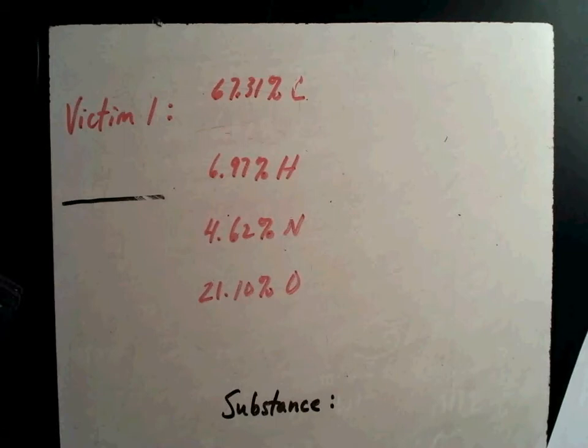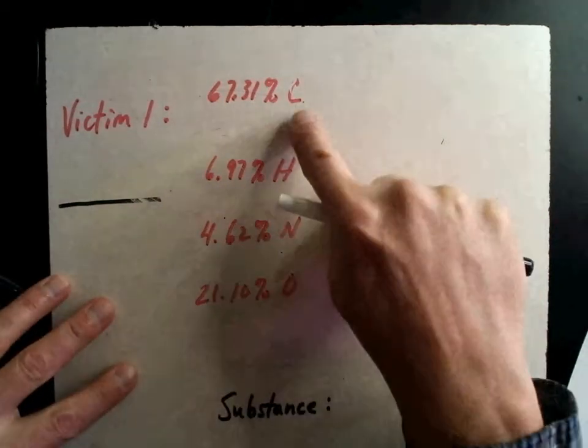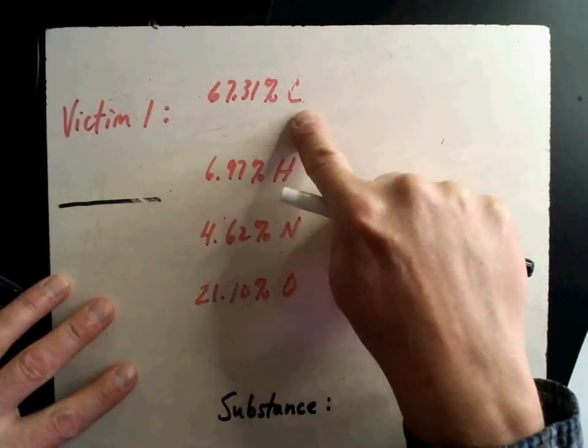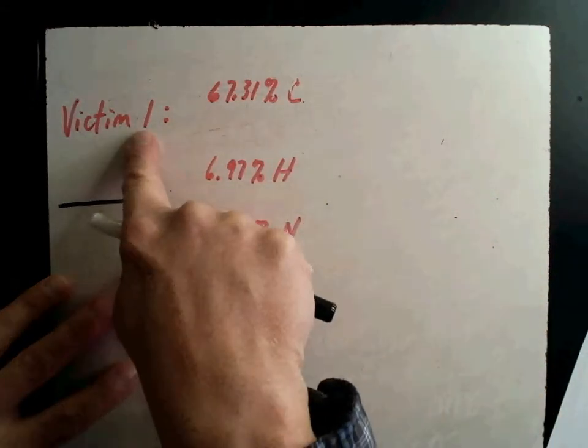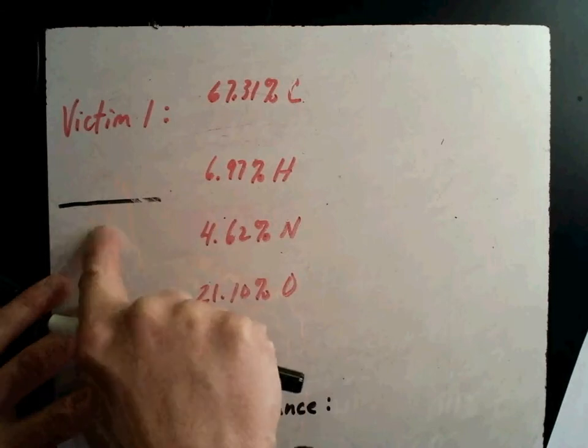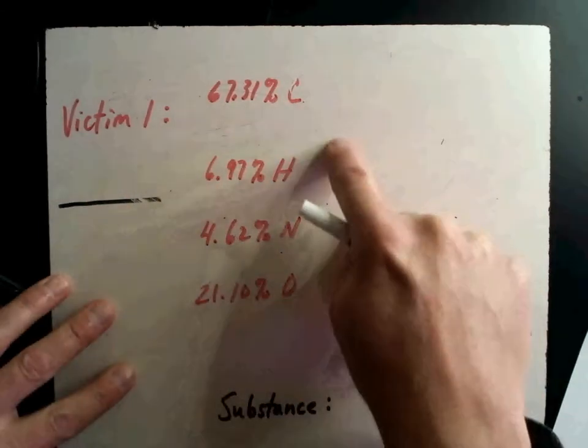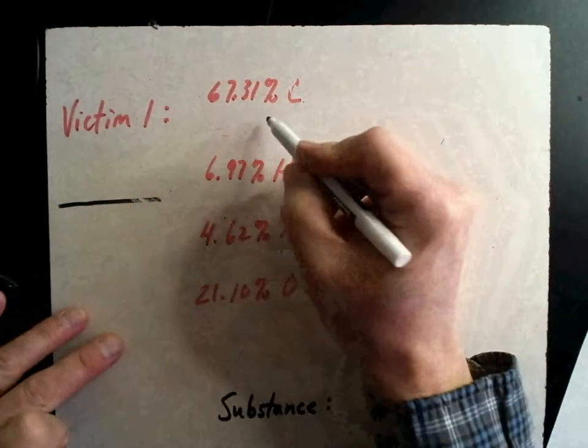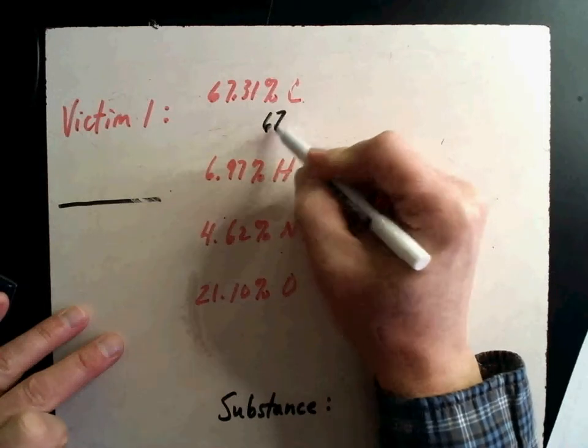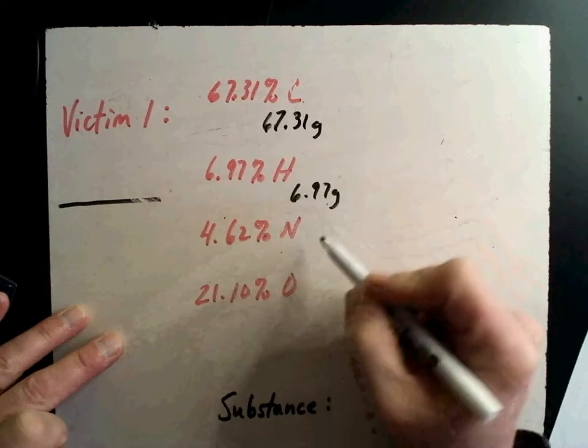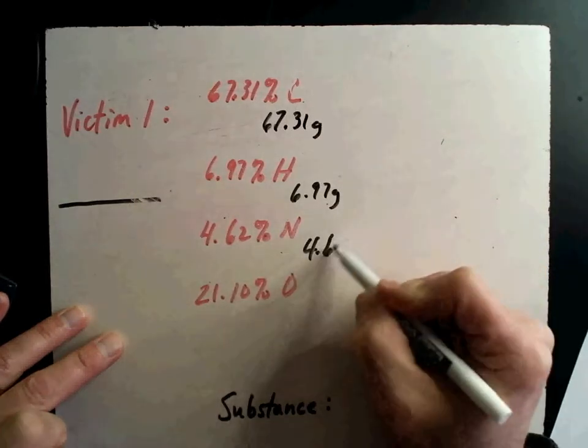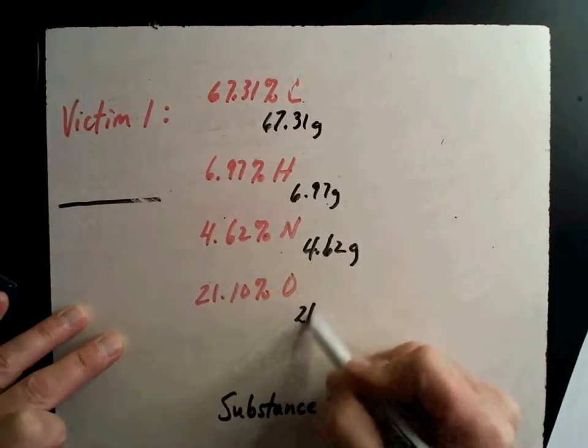Here are all my compounds. The first unknown compound is 67.31% carbon. There's hydrogen, nitrogen, and oxygen. Victim number one. This is how I would do it on my paper. I have to identify this compound first, so the very first thing we do is we make these into grams. This is all things that you know how to do from the last video.